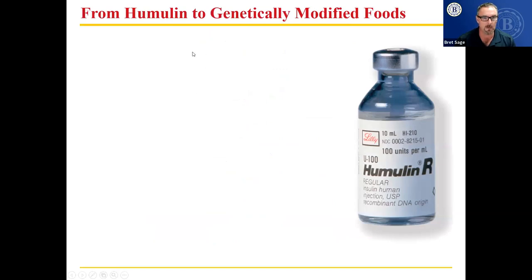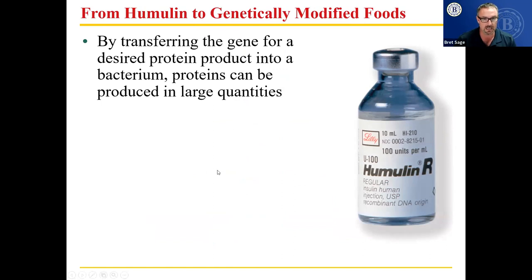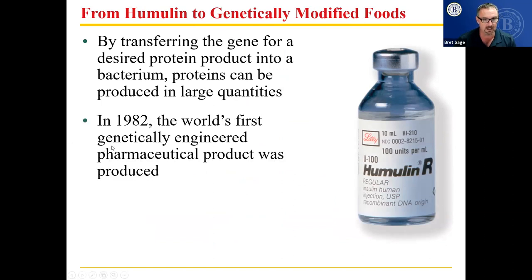This section is about humulin and genetically modified foods. By transferring the gene for a desired protein into a bacterium, proteins can be produced in large quantities. In 1982, the world's first genetically engineered pharmaceutical product was produced — it was called humulin. The label says insulin human, so this is human insulin that people with diabetes need to inject so they can get sugar from their blood into their body cells.